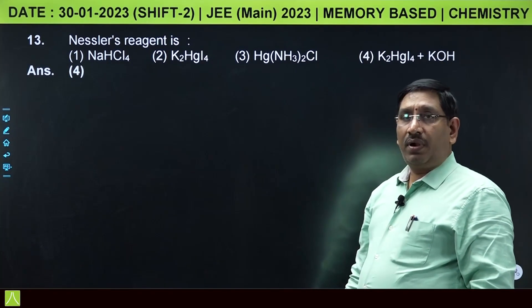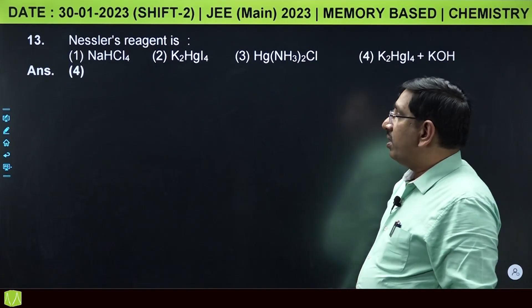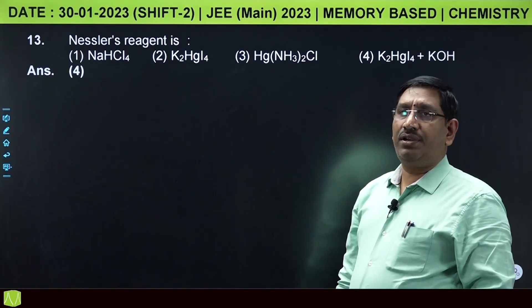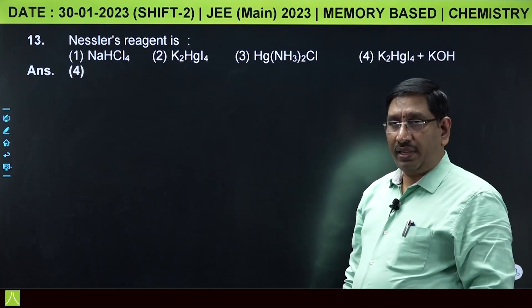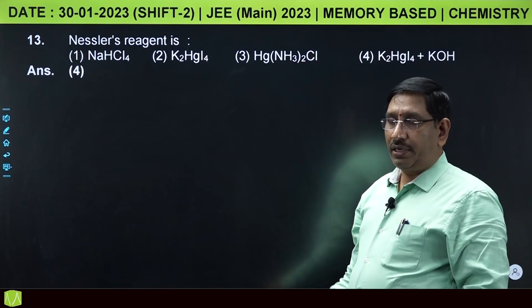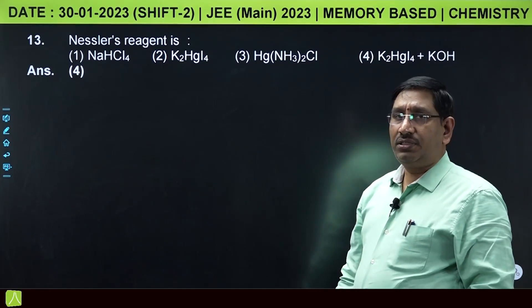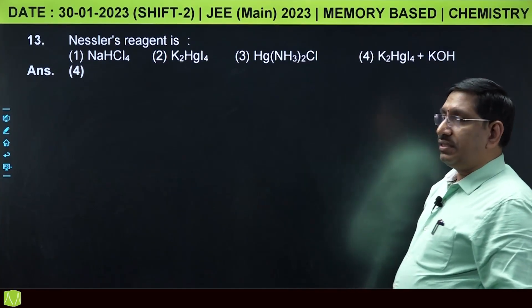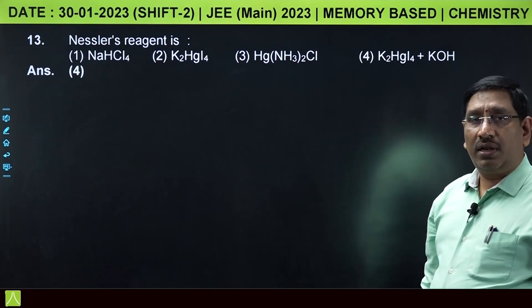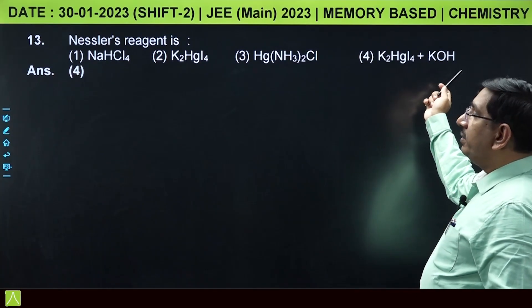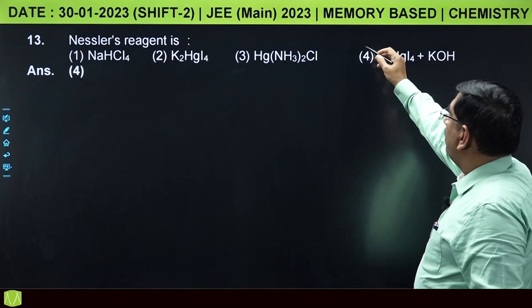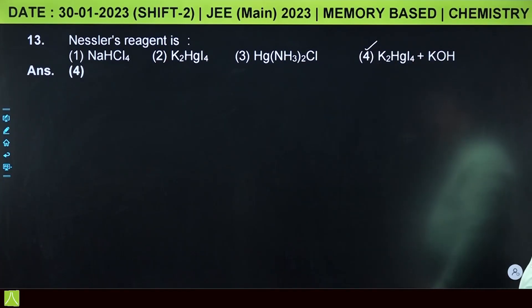This is from qualitative analysis. Nessler's reagent is used to identify the ammonium ion. When you add this reagent, you get a brown colored precipitate. Nessler's reagent is alkaline K2HgI4, potassium mercury iodide.